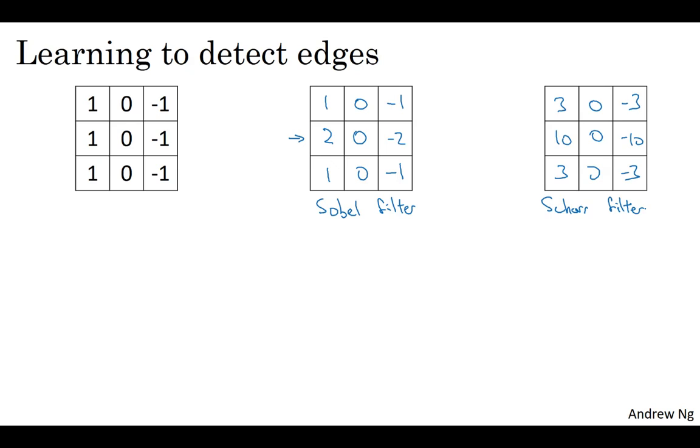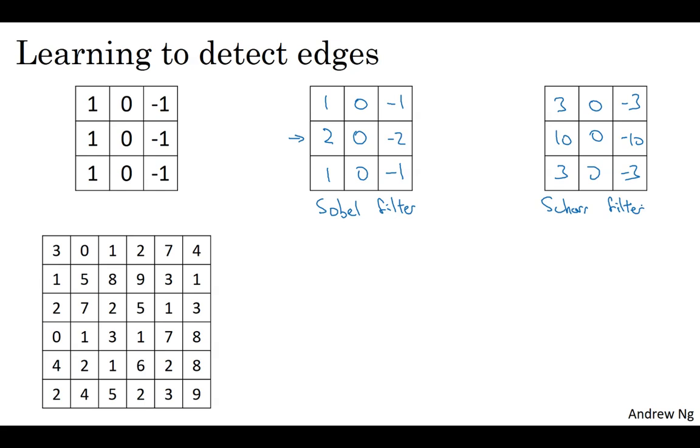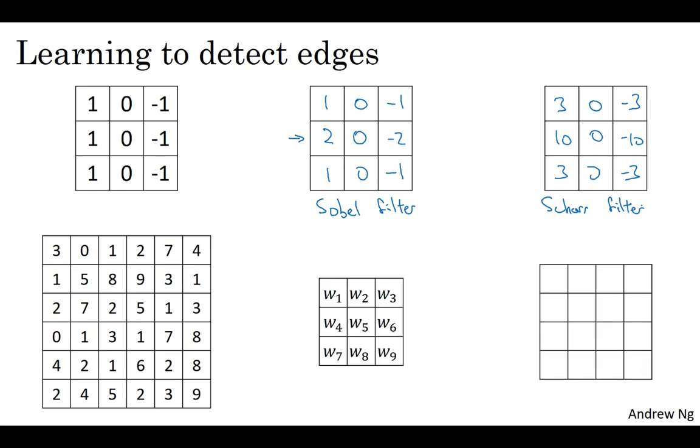With the rise of deep learning, one of the things we learned is that when you really want to detect edges in some complicated image, maybe you don't need to have computer vision researchers handpick these nine numbers. Maybe you can just learn them and treat the nine numbers of this matrix as parameters which you can then learn using backpropagation. The goal is to learn nine parameters so that when you take the image, the 6x6 image, and convolve it with your 3x3 filter, that this gives you a good edge detector.